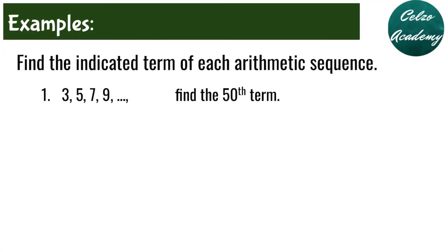Given the arithmetic sequence 3, 5, 7, 9 and so on, find the 50th term. In finding the nth term of an arithmetic sequence, we will be using the formula a sub n is equal to a sub 1 plus n minus 1 times d.